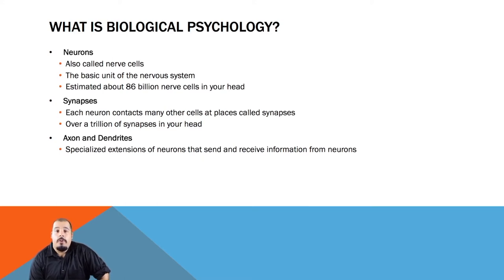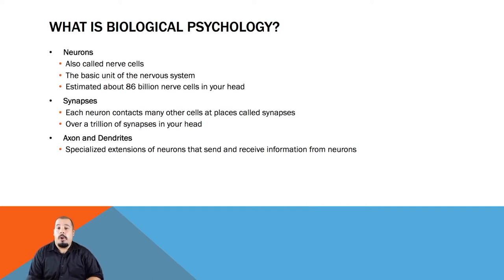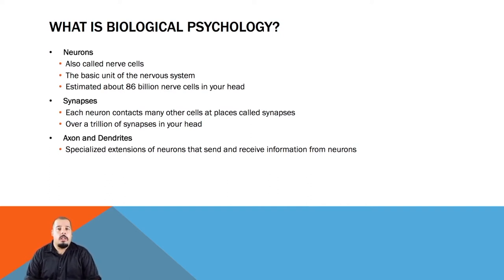The axon is responsible for sending this message to the next neuron and the dendrites are responsible for receiving messages from other neurons. The point at which two neurons communicate with one another is called the synapse. Each neuron in the brain has multiple dendrites, thus trillions of synapses exist in your brain alone.